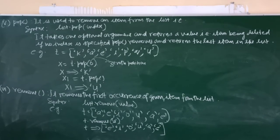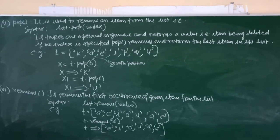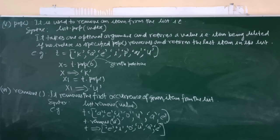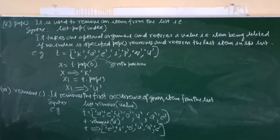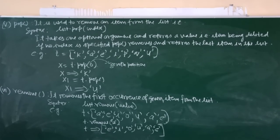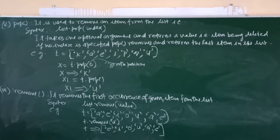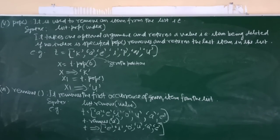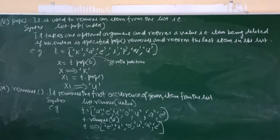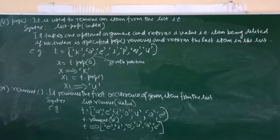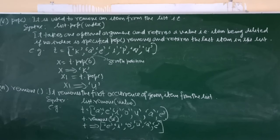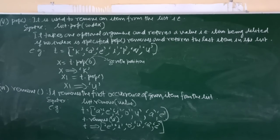For example, t is equal to a, e, i, o, u, a, e. Then t.remove a. So t will give you output as e, i, o, u, a, e.